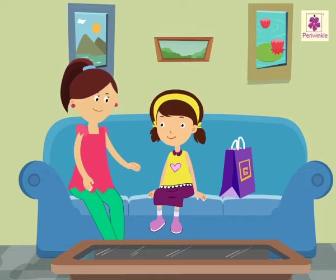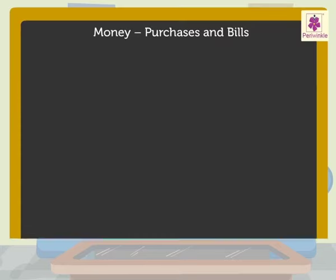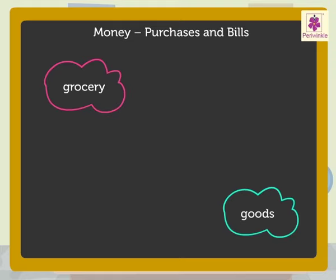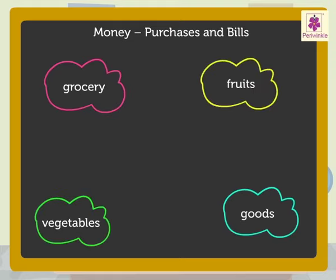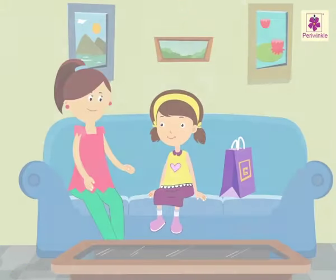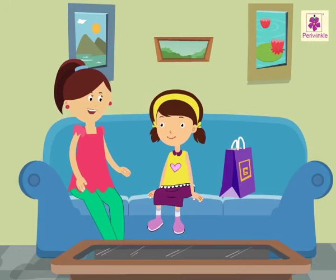Today let us learn about purchases and bills with Lily and her mother. Lily, do you know when we buy goods, groceries, fruits, and vegetables from the shop, the shopkeeper gives us a bill? It is a receipt that tells us the things purchased by us and the payment made to the shopkeeper. Let us now visit a general store and understand it in a better way.